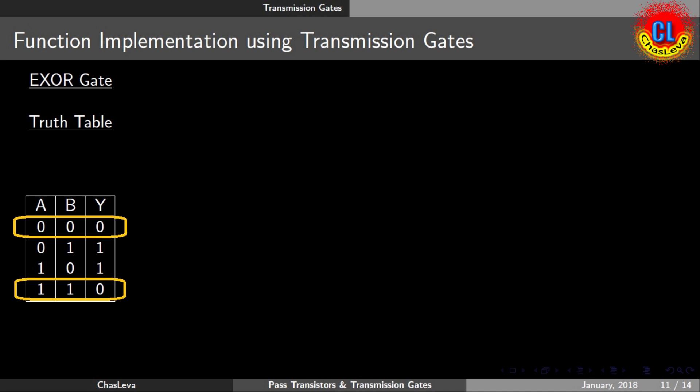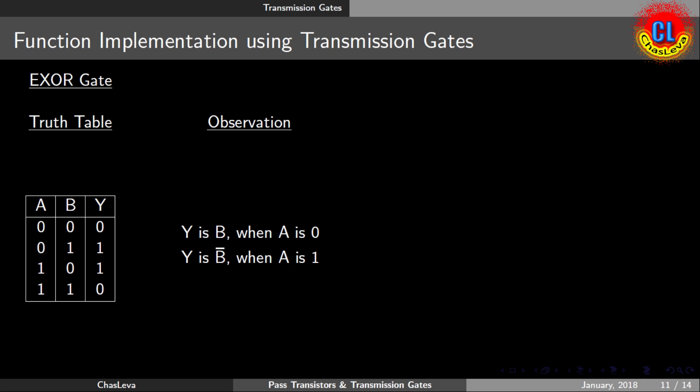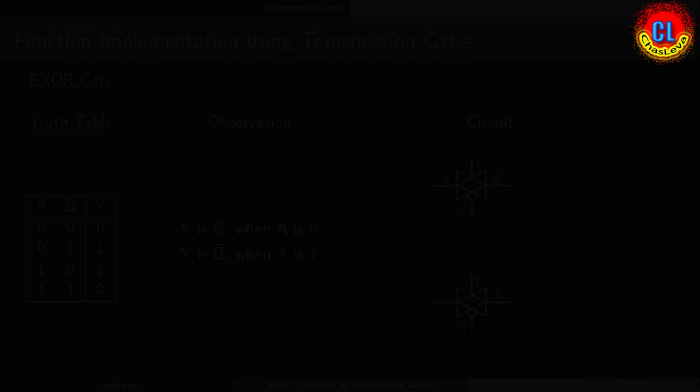To draw the circuit, it will be good if we get a good logic, so that we can implement the function easily. While observing the truth table, we will get a logic. The output Y is B when input A is 0, and the output Y is B bar when input A is 1. Now we can draw the circuit easily.